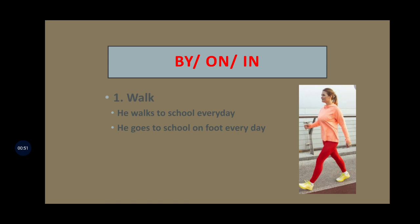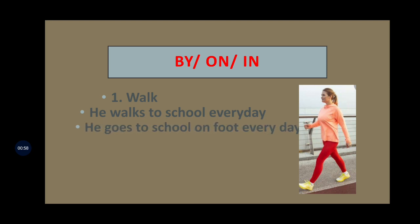For walking, you should say: I walk to school every day, or he walks to school every day, or he goes to school on foot every day. If your friend walks to school, you should say: my friend goes to school on foot every day. What is the preposition that you are using here children? On. So for walking, we make use of 'on foot'. My friend goes to school on foot every day. I go to school on foot every day.